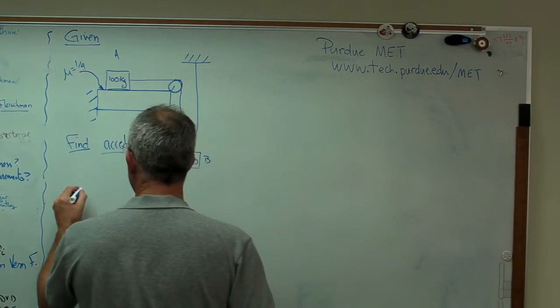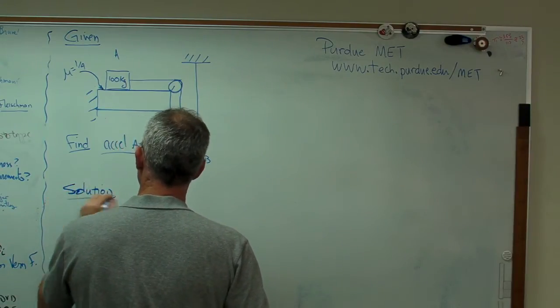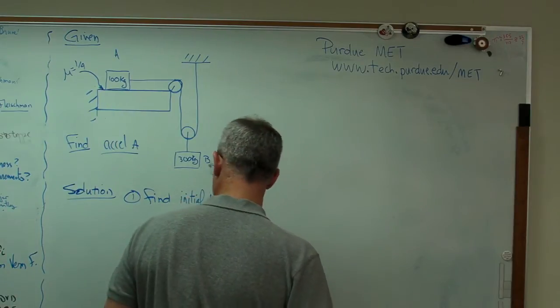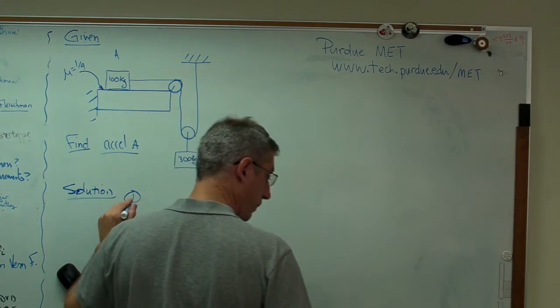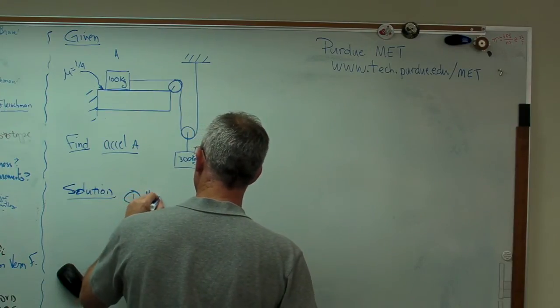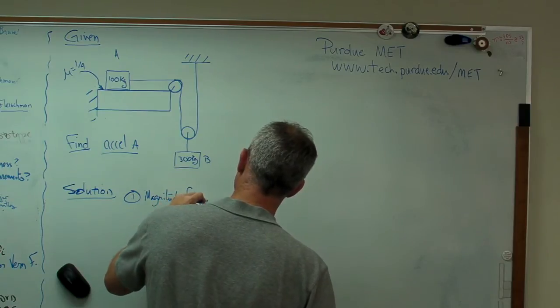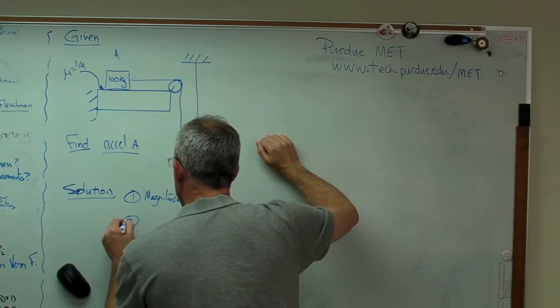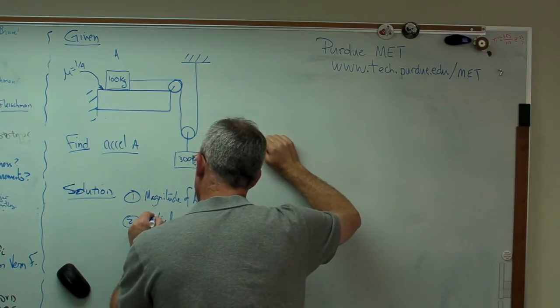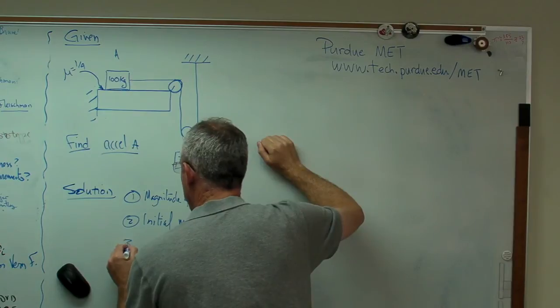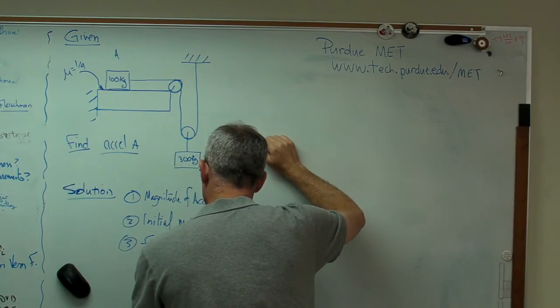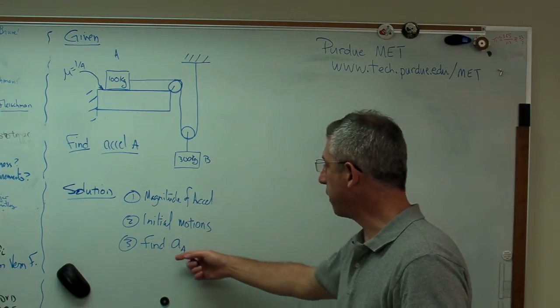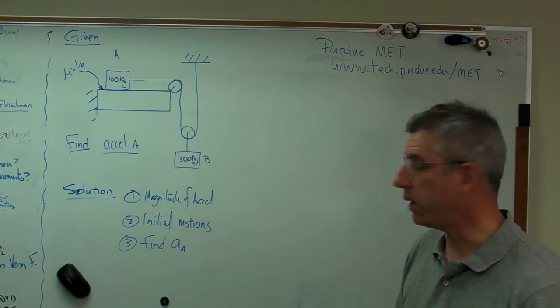So what our process is going to be, I'm going to write the solution here. We're going to find the magnitude of the accelerations first. Next thing we want to do is find the initial motions. And the third thing we want to do is find AA using dynamic equilibrium analysis. That's the big picture. This is the path we're going to walk down.